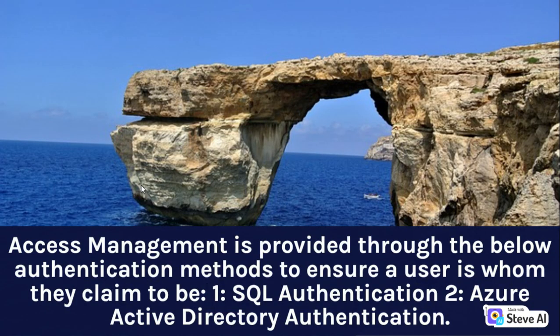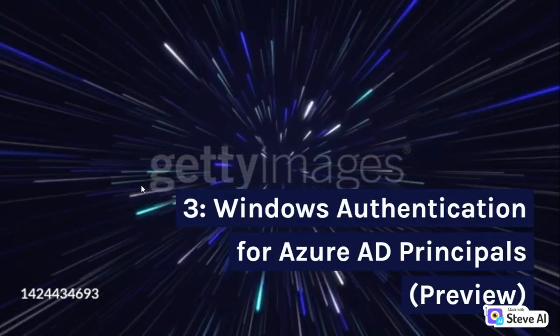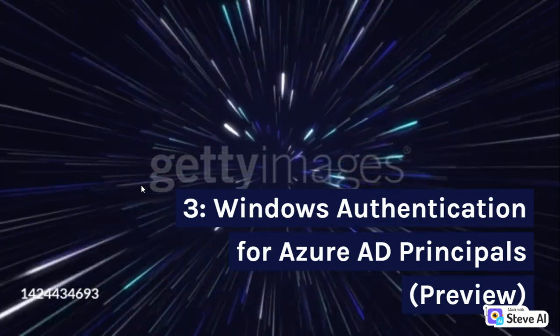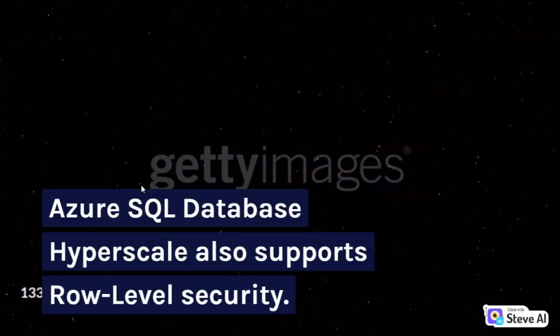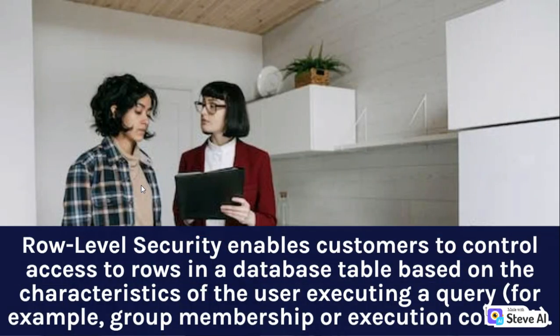Access management is provided through the following authentication methods to ensure a user is who they claim to be: 1) SQL authentication; 2) Azure Active Directory authentication; 3) Windows authentication for Azure AD principals (preview). Azure SQL Database Hyperscale also supports row-level security, which enables customers to control access to rows in a database table based on the characteristics of the user executing a query — for example, group membership or execution context.